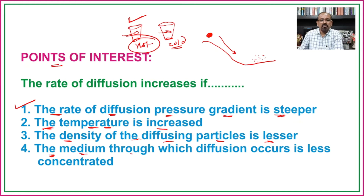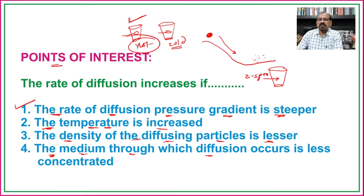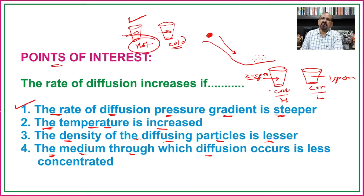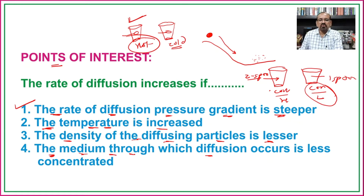The fourth factor is the concentration of the medium through which diffusion occurs. For example, a glass with two spoons of sugar already dissolved has a higher concentration, while a glass with one spoon has a lower concentration. Diffusion will be higher in the solution that is less concentrated. If the medium is more concentrated, the rate of diffusion will automatically decrease.